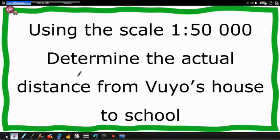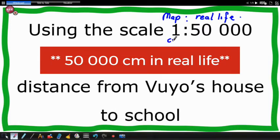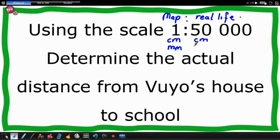We are looking at maps and scales. We are given a number scale, one is to 50,000. They say determine the actual distance from Voyages house to school. First thing you need to know here is that one unit on the map represents 50,000 units in real life. So one centimeter on the map will represent 50,000 centimeters in real life, or you can use one millimeter on the map will represent 50,000 millimeters in real life.